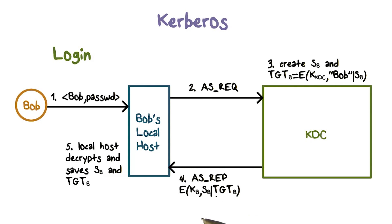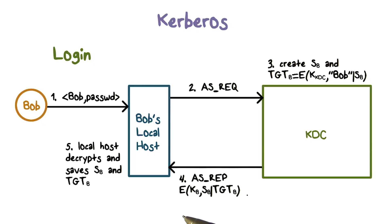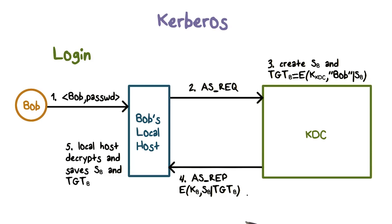That is, any new request to the KDC will include the TGT in the request message, and the new tickets from the KDC will be encrypted using SB.